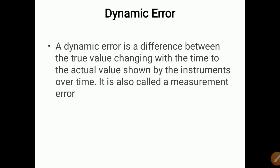Next is dynamic error. Dynamic error is the difference between the true value changing with time and the actual value shown by the instrument over time. It is also called measurement error. Suppose the input value is changing with respect to time; the output should also change, but sometimes there is a difference between actual and measured value. That difference is called dynamic error because the error is changing with respect to time.